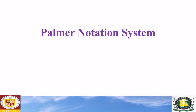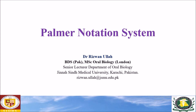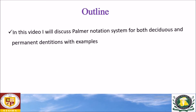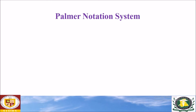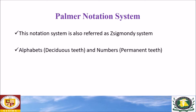In this video, I'll talk about the Palmer notation system for both the deciduous and the permanent dentitions with examples. The Palmer notation system is also referred to as the Zsigmondy system. In this notation system, we use alphabets for the deciduous teeth and numbers for the permanent teeth.